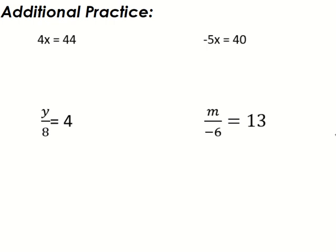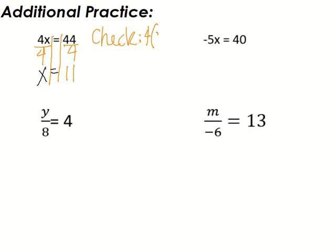This is multiplying and dividing — same idea. We're going to do the opposite of everything it says, and everything we do to one side we have to do to the other side of the equal sign — think of it as the middle of the balance. This is multiplied by 4, so the inverse would be to divide by 4. 4 divided by 4 is 1, so I'm left with 1x. I divide by 4 on the other side too, and 44 divided by 4 gives me 11. You can check: 4 times 11 equals 44. Check.